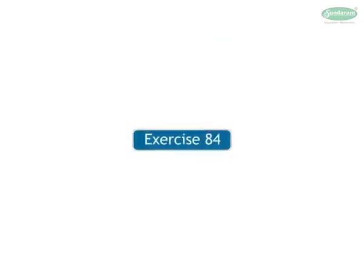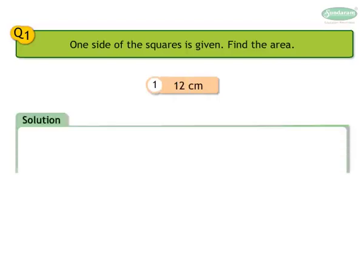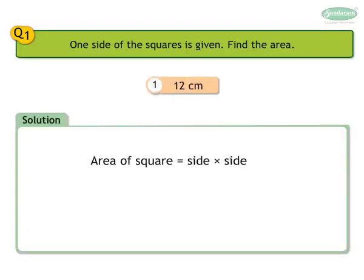Let us solve Exercise 8.4. Question 1: One side of the square is given. Find the area. Number 1: 12 centimeters. Solution: Area of square is equal to side into side, equals 12 into 12, equals 144 square centimeters.